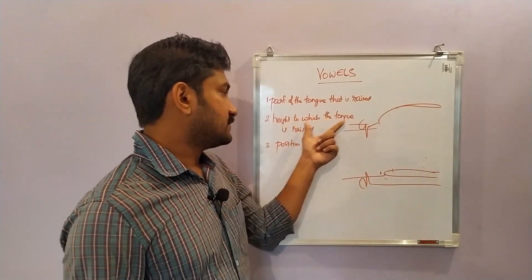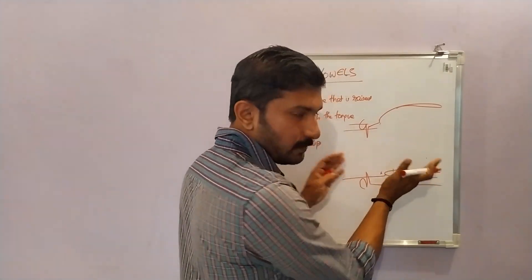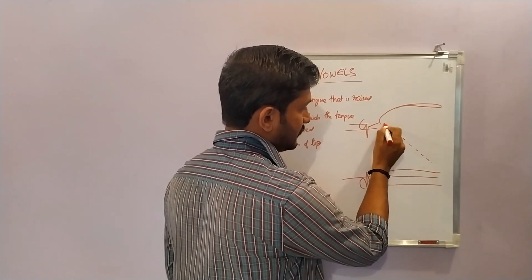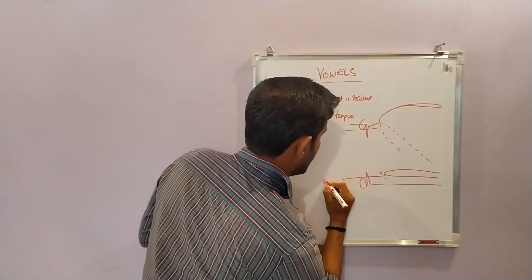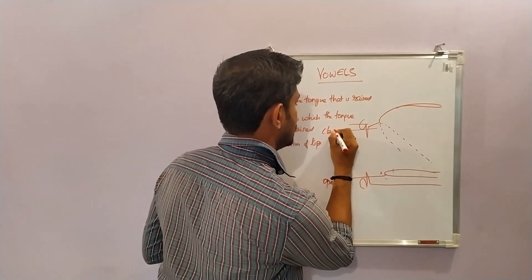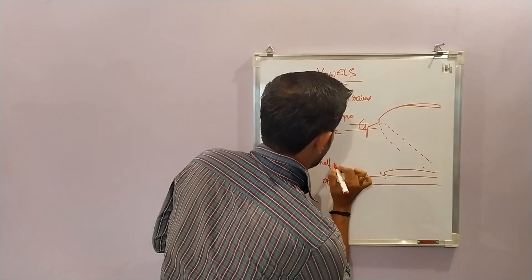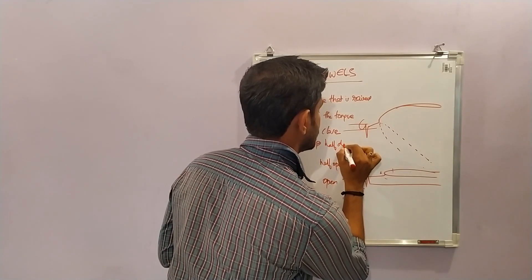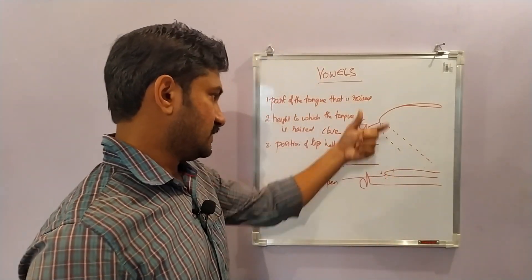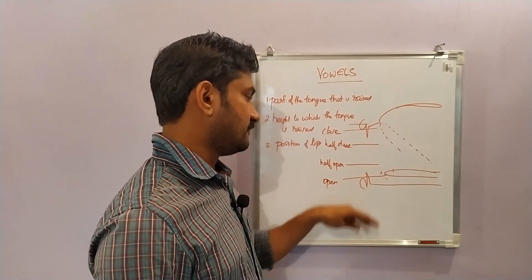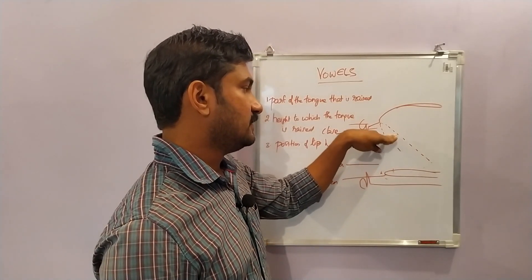The next criteria is the height to which the tongue is raised. The tongue can lie flat — this is the open position. The tongue can be raised to the roof of the mouth, which is the closed position. For classification we have two more positions: the half-open position and the half-close position. So based on the height to which the tongue is raised, we have four different positions: open, half-open, half-close, and close.